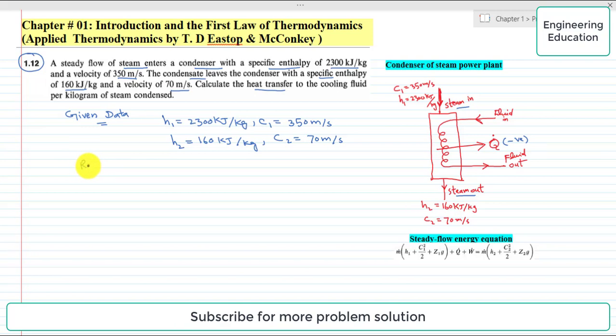We are required to find that heat transfer, which is Q̇, per kilogram of steam condensed.